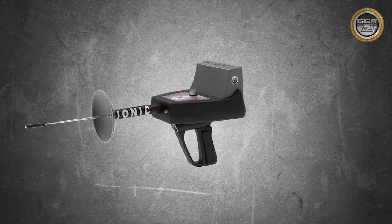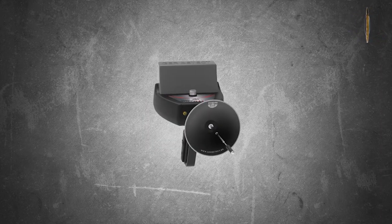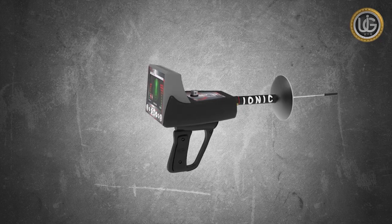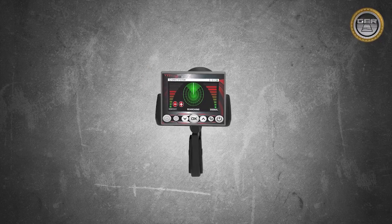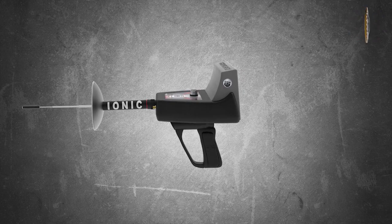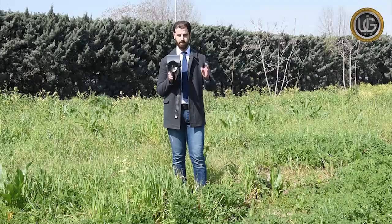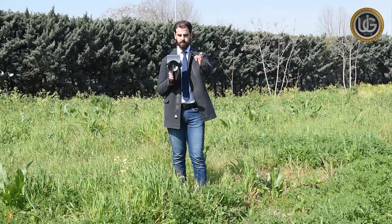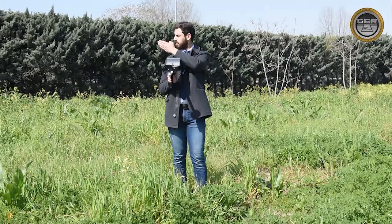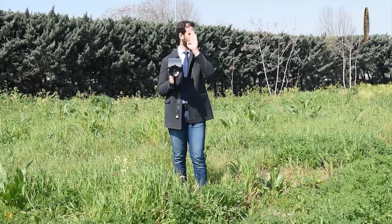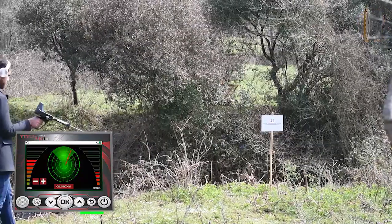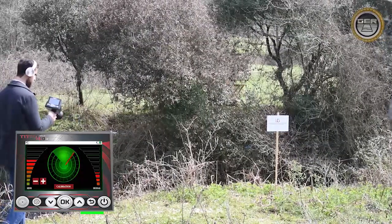First of all, what is the ionic system? It is a system that specializes in detecting ionic fields that form around gold and buried treasures. The explorer must stand facing north to south to enable the device to capture the ionic field.